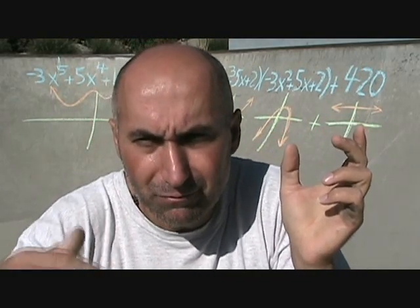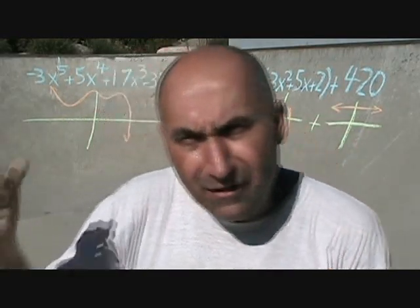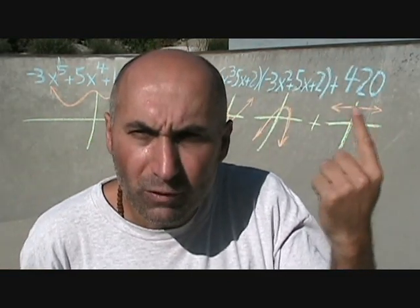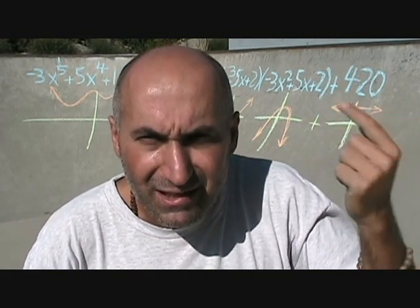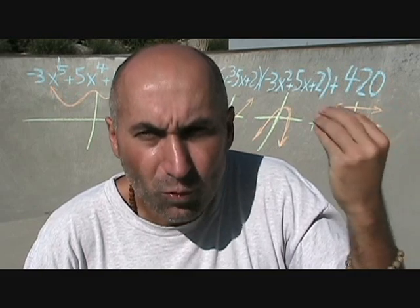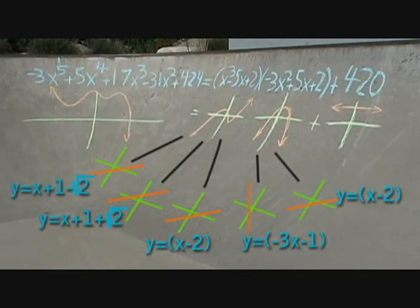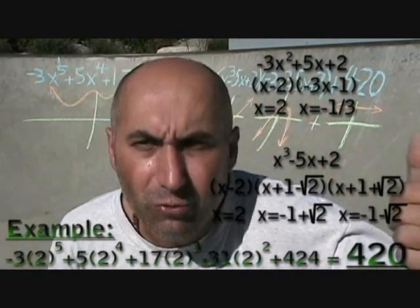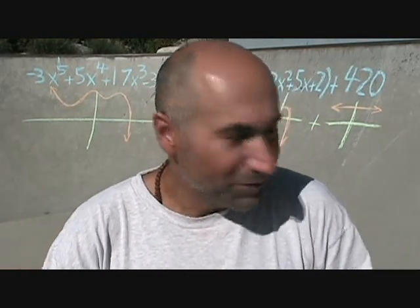Taking one function and dividing into another just to see what the end result is — is the remainder what we want? Keep in mind the remainder is your y-coordinate when x equals the roots. You can factor these down further, get your x-values, and if you plug those x-values into the original function, you get 420 out.